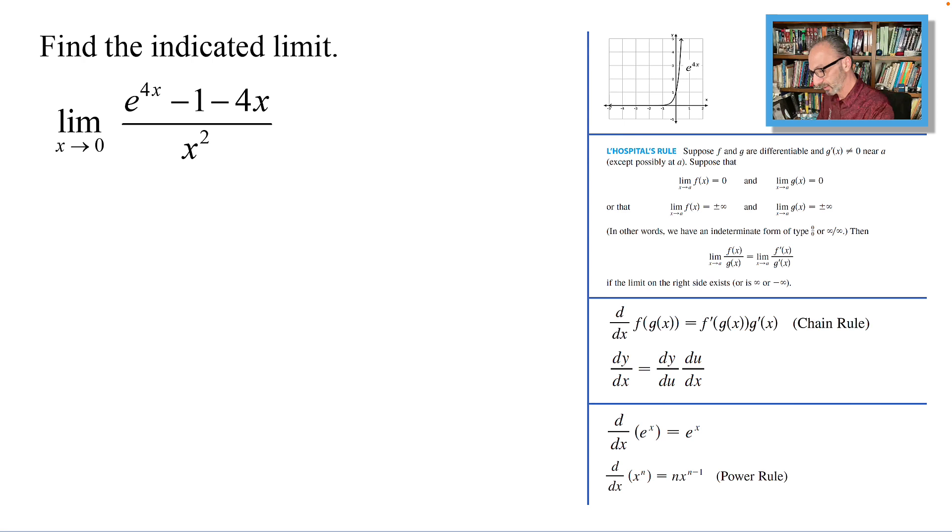Now what we have here is limit as x approaches zero of e^(4x) - 1 - 4x over x².